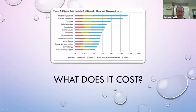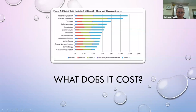This slide goes over the costs per phase of trial across different disease areas like respiratory, oncology, and hematology. But basically, the average duration of a trial is 12 years, and the average cost over those 12 years is $1.2 billion.